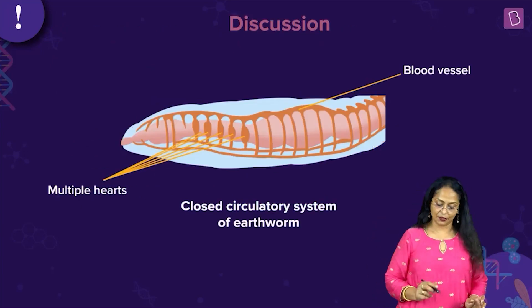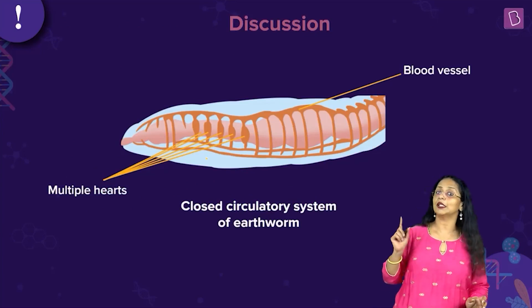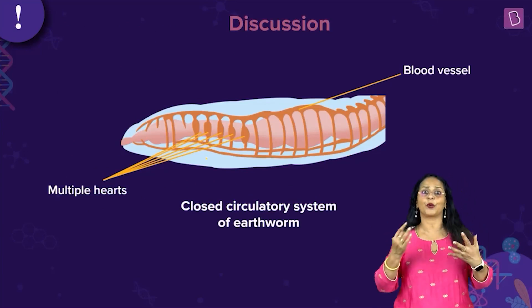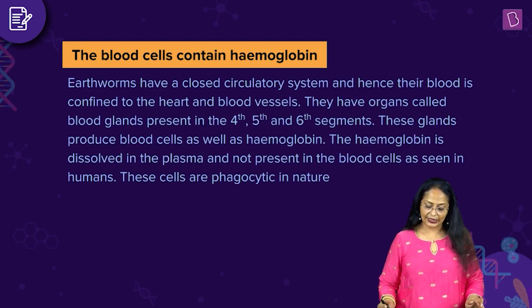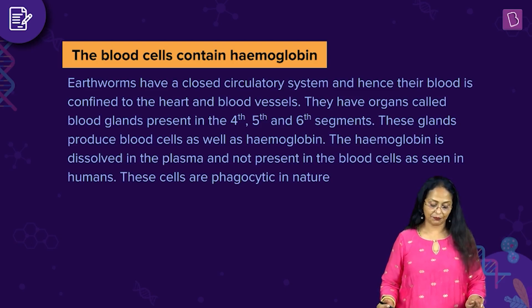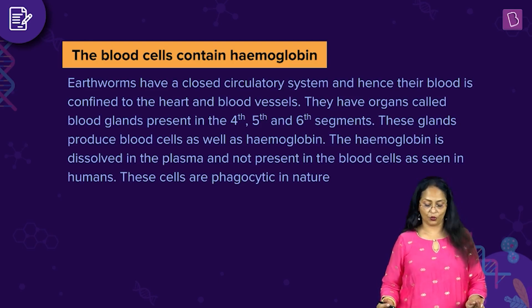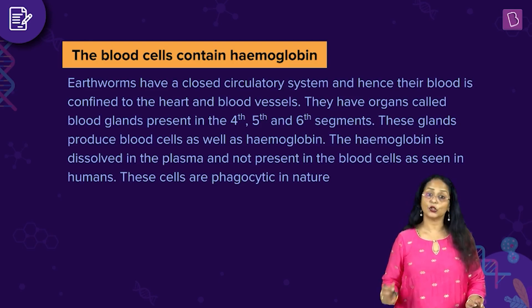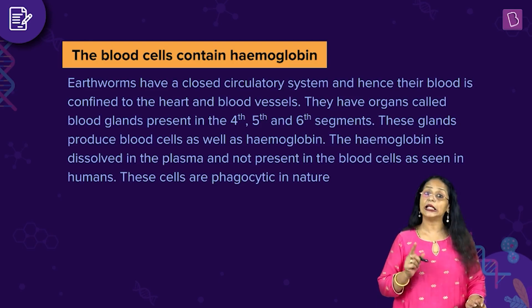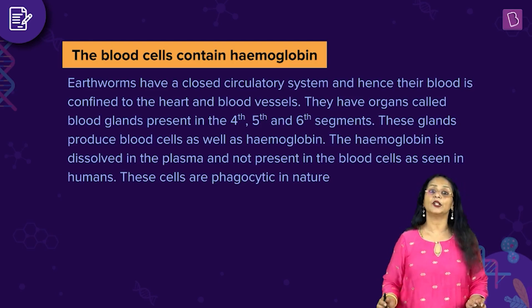This is the closed circulatory system of the earthworm. You can see the multiple hearts — five pairs of aortic arches; it is not a true proper heart. Earthworms have a closed circulatory system and hence their blood is confined to the heart and blood vessels. They have blood glands present in the fourth, fifth, and sixth segments. These glands produce blood cells as well as haemoglobin. The haemoglobin is dissolved in the plasma and not in the blood cells as seen in humans. These cells are phagocytic in nature. So the incorrect statement is that the blood cells contain haemoglobin — that is the right option for the question.